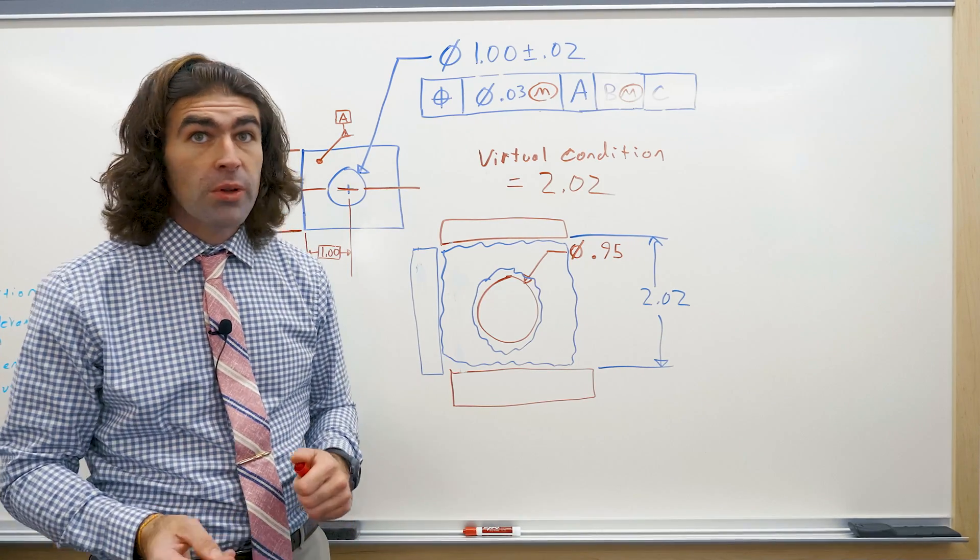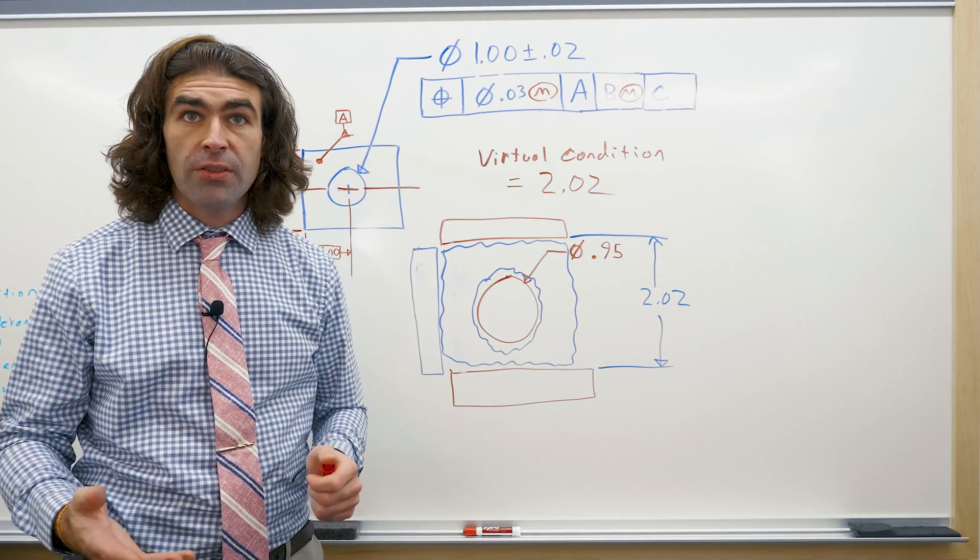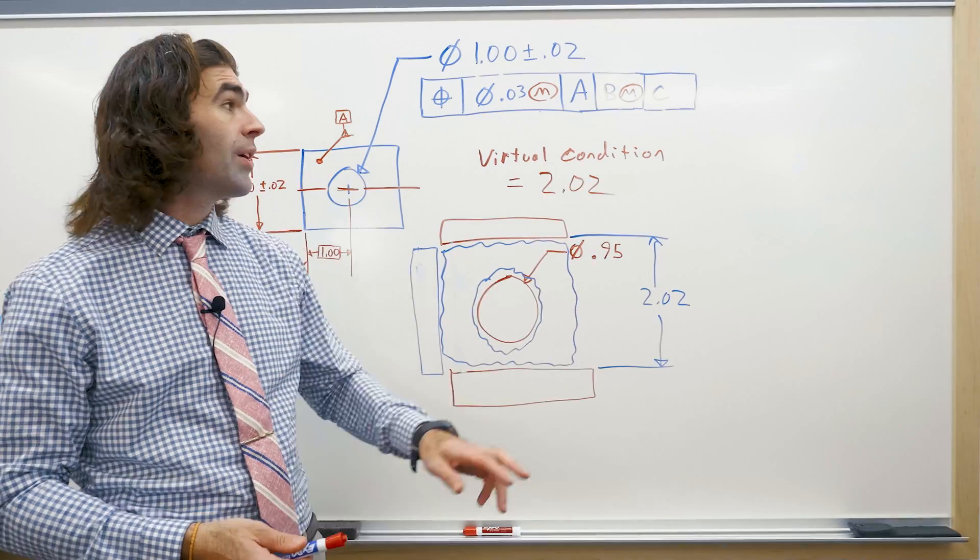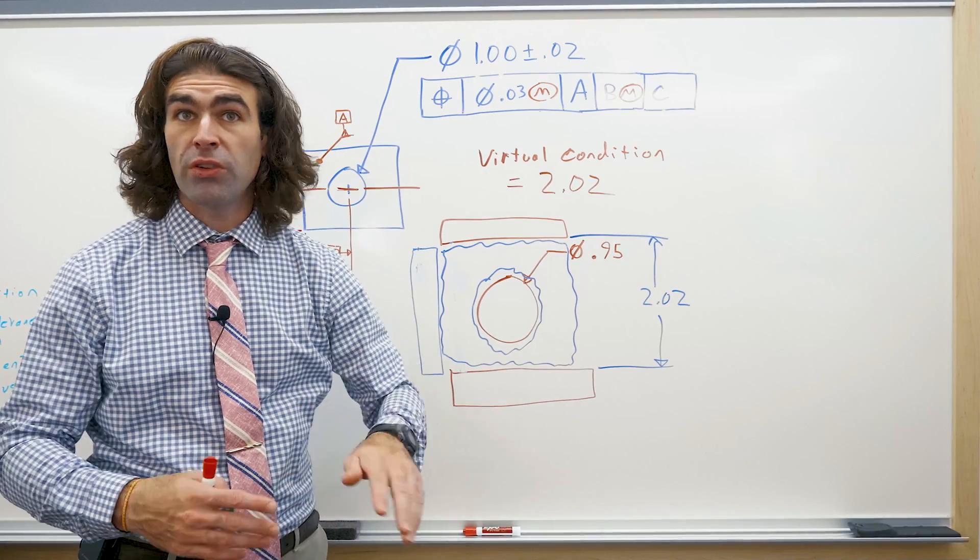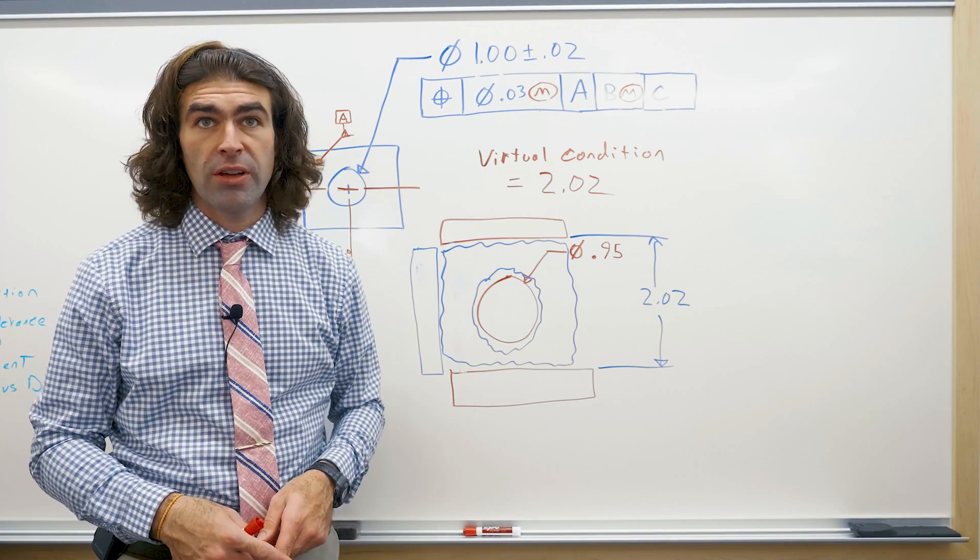So that's it for this video. I just wanted to talk real quick about modifiers, material condition modifiers in the feature control frame. They're used in two very different ways: bonus tolerance or datum shift.